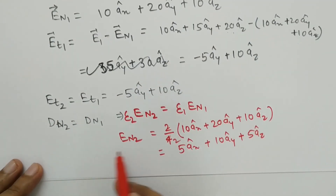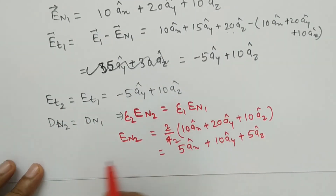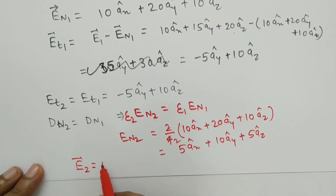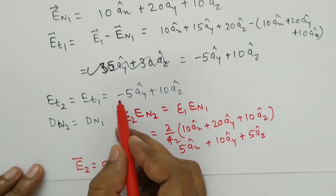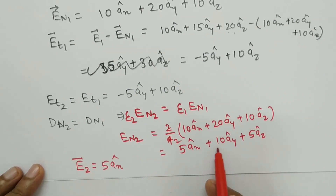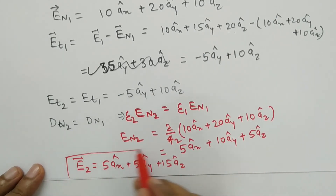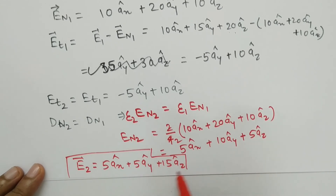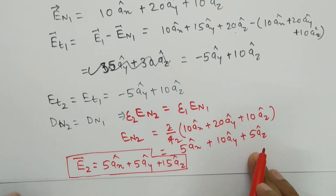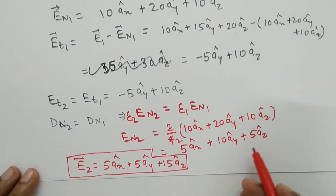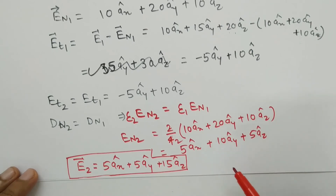Now we add ET2 and EN2 together to calculate E2. There is no Ax component in the tangential part, so the Ax term comes only from EN2: 5 Ax. Then (minus 5 plus 10) Ay gives 5 Ay, and (5 plus 10) Az gives 15 Az. So E2 equals 5 Ax plus 5 Ay plus 15 Az. This is how we calculate the electric field when the boundary is not exactly in the XY, YZ, or ZX plane. Thank you.